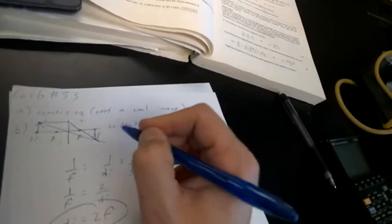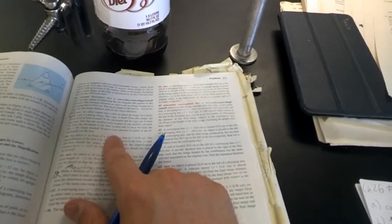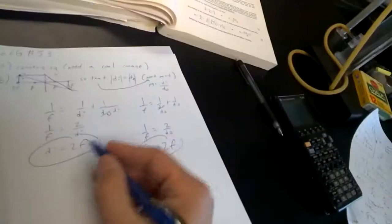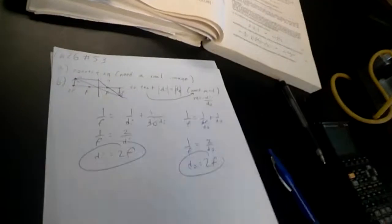That's where that, if we talked about the image height, that would be negative. The di would be positive because it's a real image. Was there anything else? I think that was B and C, and to express your answer in terms of the focal length. So I'm good, I'm allowed to have f in my answer. That's it.